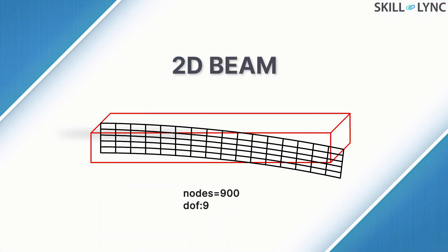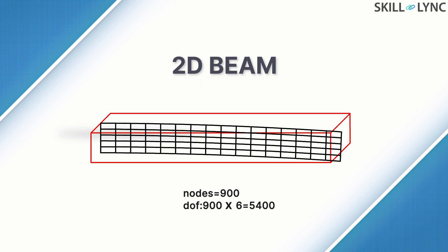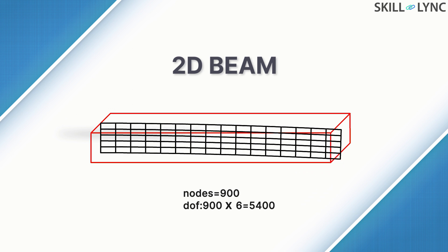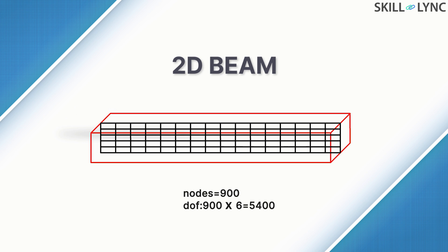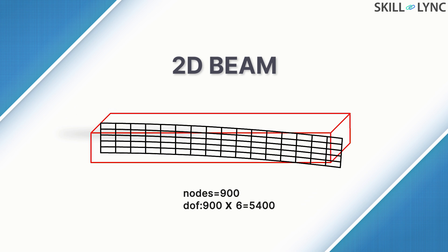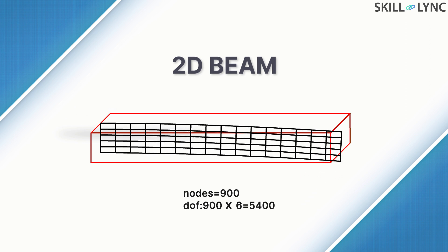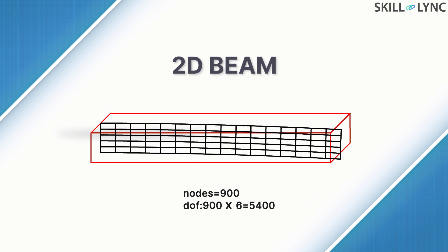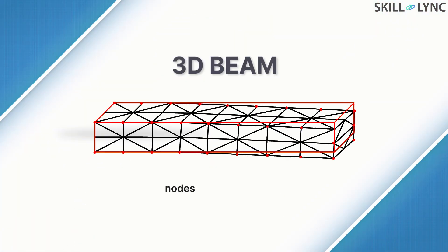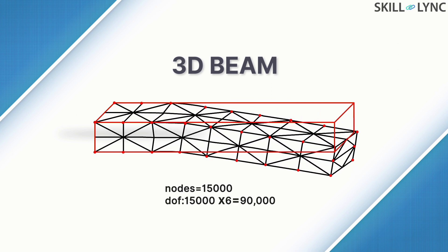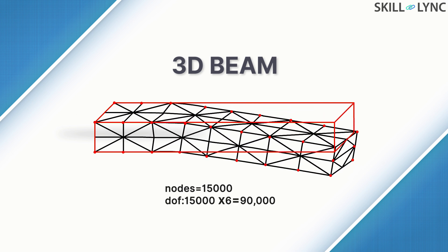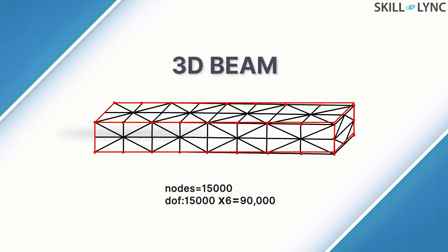We could similarly take a slice or mid-surface of the beam and mesh it with pure quad elements. This would result in a slightly higher number of nodes — let us say 900 nodes. Finally, we could create a tetra mesh which would result in a three-dimensional mesh of way more nodes, which in this case is 15,000.